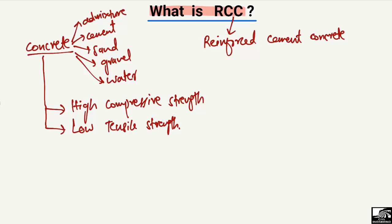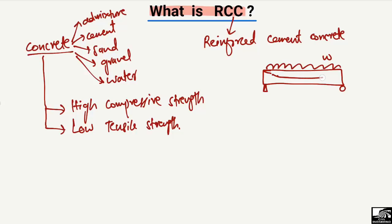Now, consider a beam here made of concrete with two supports and a uniformly distributed load acting on it. When the load W acts on this beam, the beam will try to deflect and will show some deflection, bending downward like this.